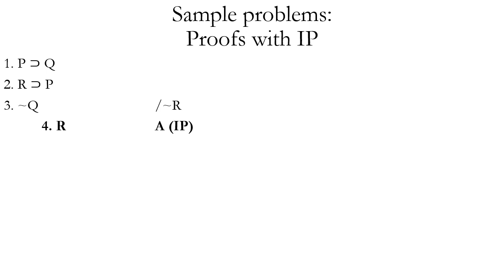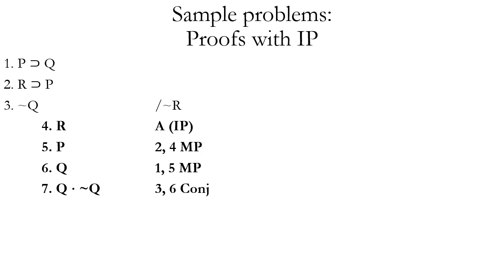Now we're strategizing on how we can use our assumption with the initial premises to generate a contradiction. We can do modus ponens on lines two and four to derive P. Then you'll notice lines one and five could also be used for modus ponens. So now we have Q on line six — do you see the contradiction? We have a contradiction between line six and line three. To show that it's a contradiction, we have to make a conjunction of those two contradictory propositions: Q dot tilde Q using the conjunction rule.